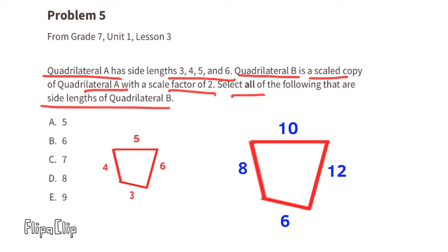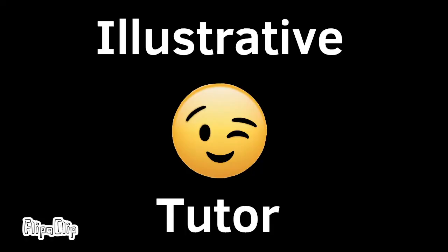So we choose 6 and 8. We would not choose 5, 7, or 9 because those aren't side lengths of quadrilateral B. Please take a moment to subscribe to my channel and leave a comment below — thanks for watching!